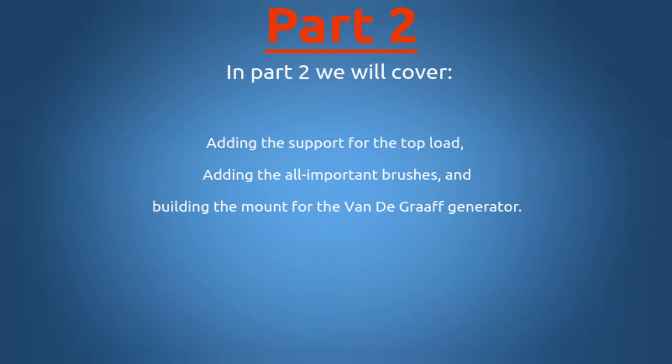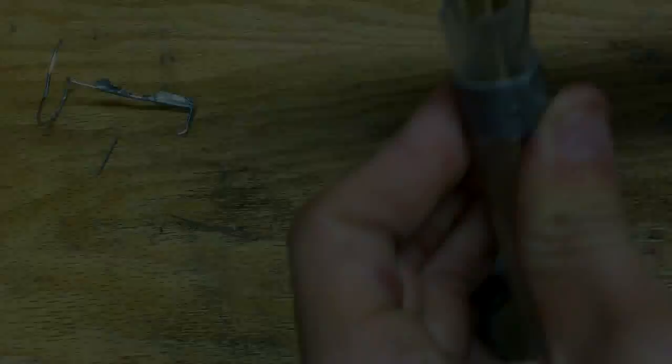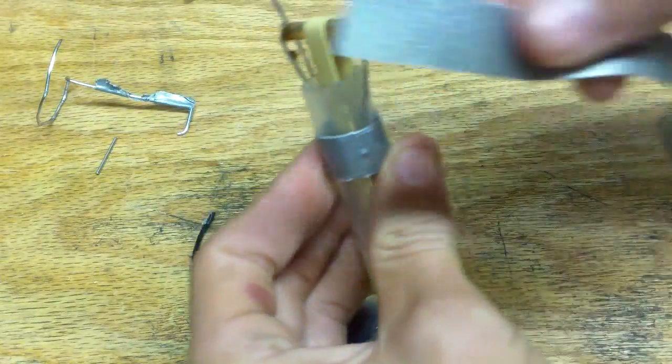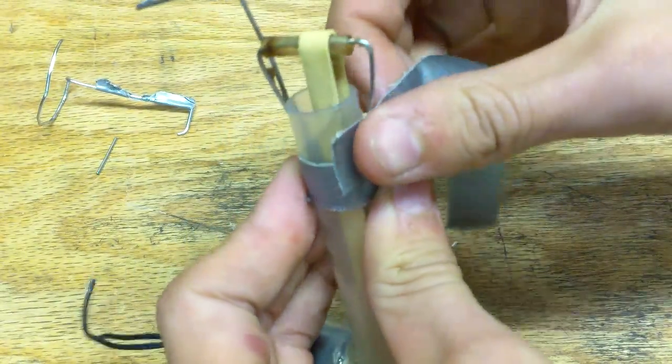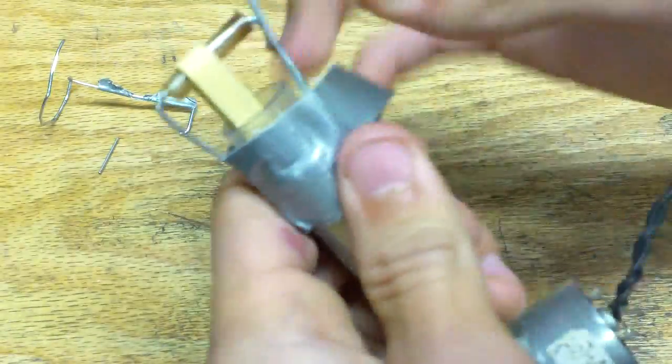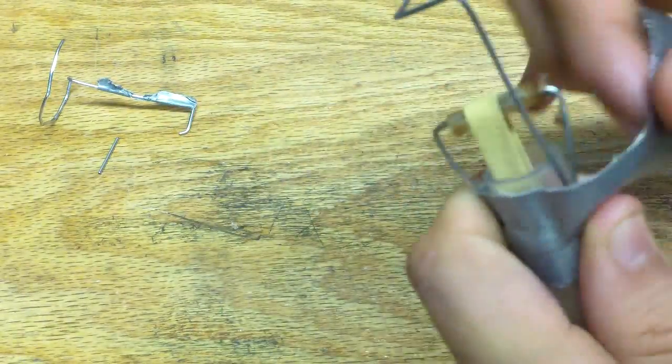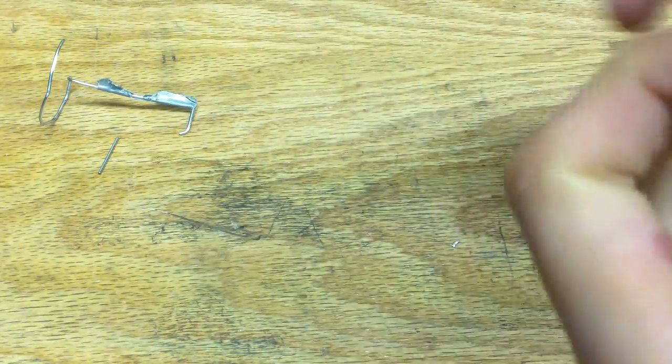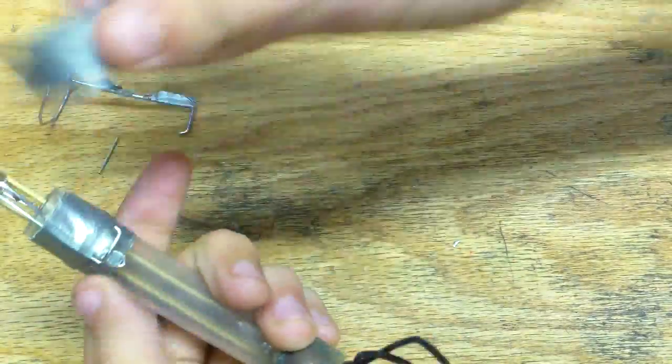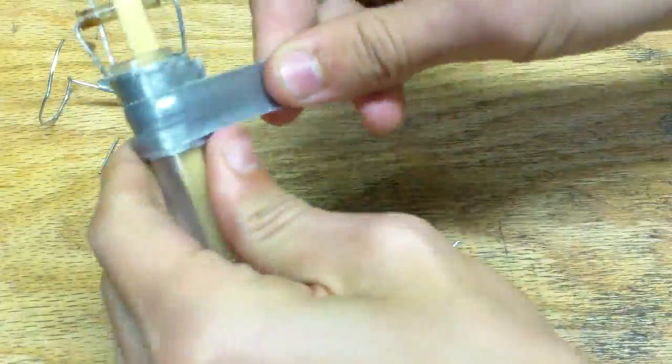Now we're almost done. For part two, we will be adding support for the top load, adding the all-important brushes, and mounting the Van de Graaff generator. Take the modified paper clip and tape it to place. Make sure to cover up any of the exposed parts of the paper clip with tape.